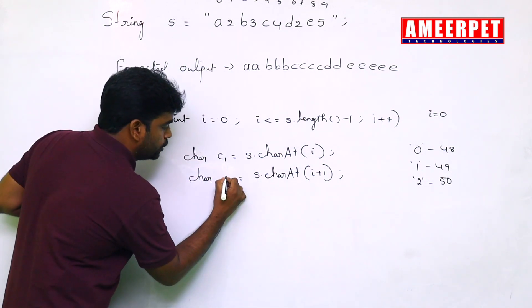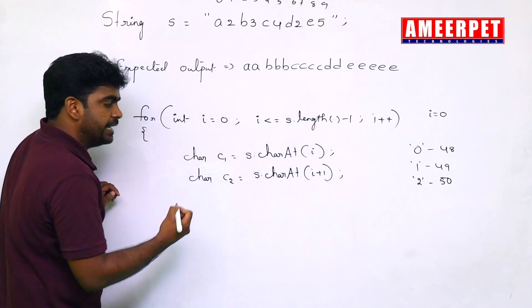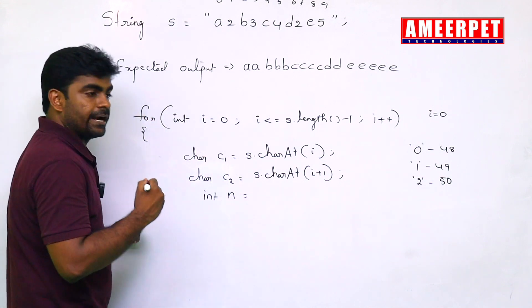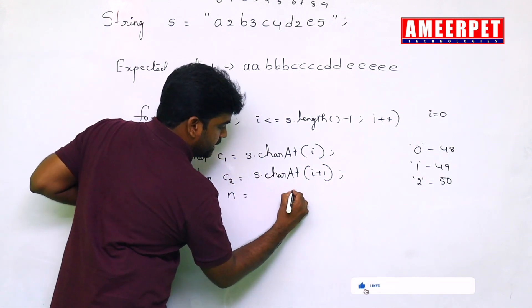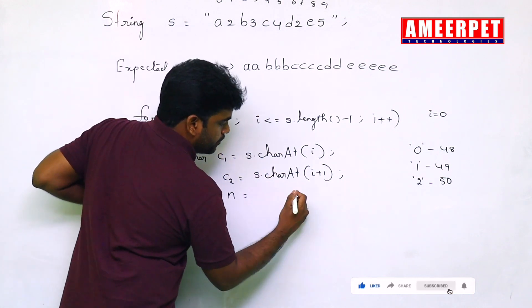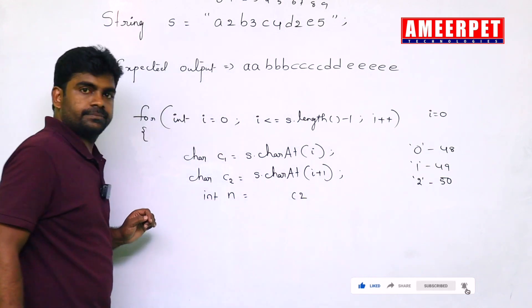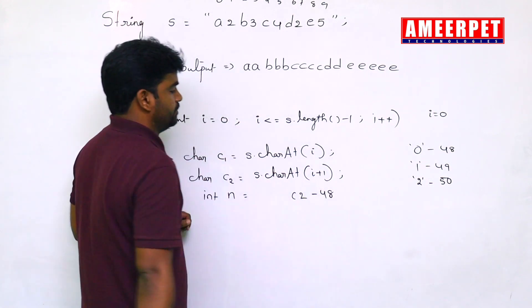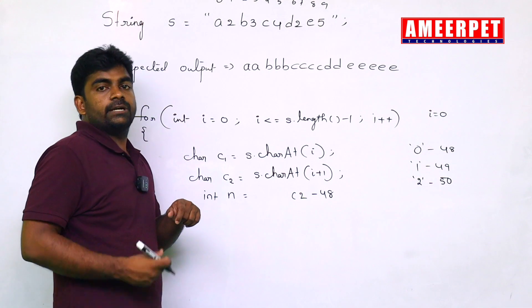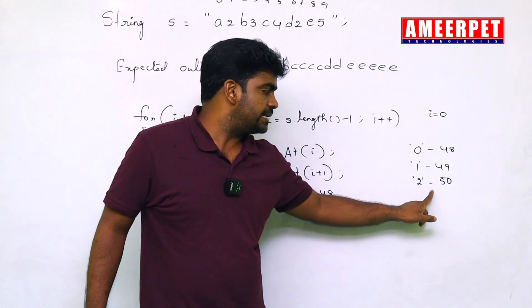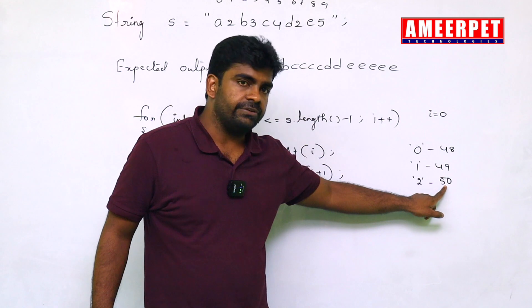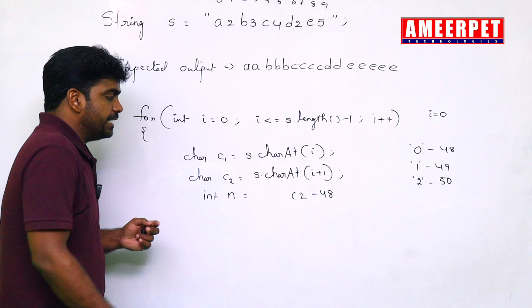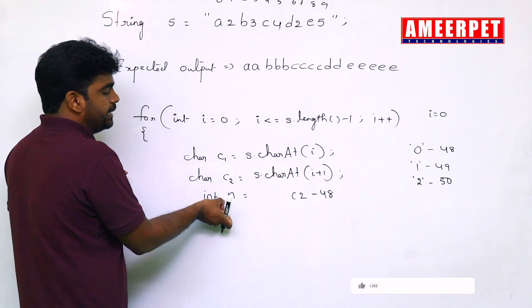This one is a character 2. We need to convert into integer n. That is C2, character C2 minus 48. C2 minus 48, because here it is value 50, 50 minus 48, the value will give 2. The 2 will come and store into this n.